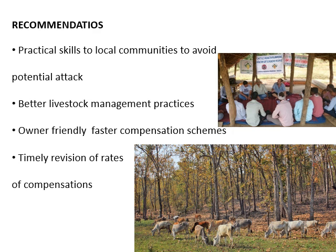To reduce the problem of human-tiger conflict, practical skills should be provided to local communities to avoid potential attacks. The forest department and local NGOs working in these areas should organize workshops to equip local communities with these practical skills. Better livestock management practices should be encouraged in the area to reduce attacks on livestock. Owner-friendly and faster compensation schemes should be encouraged, as the current schemes are too bureaucratic; there should also be timely revision of compensation rates so local communities receive appropriate compensation for their losses.